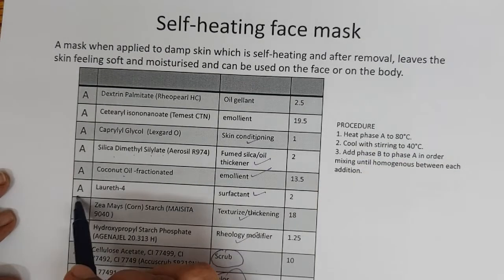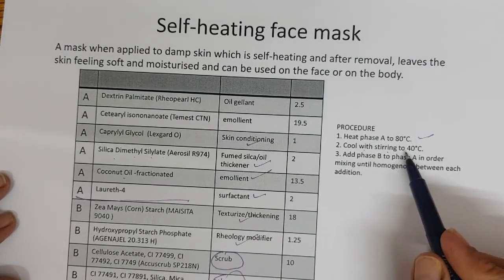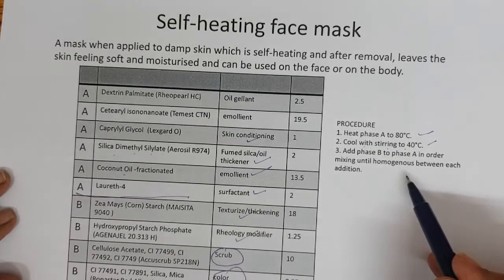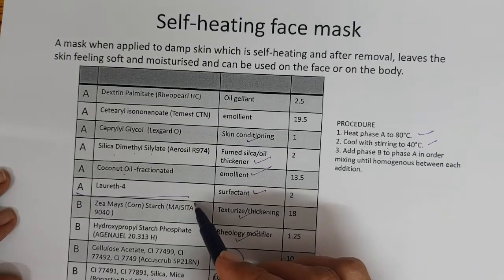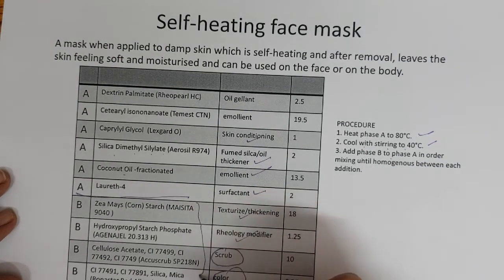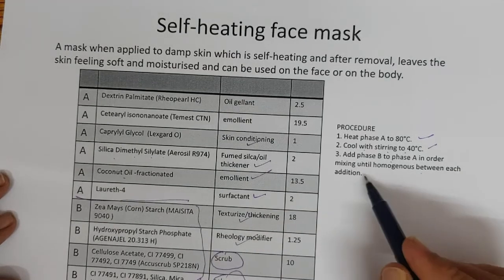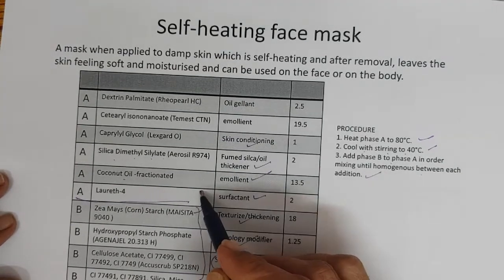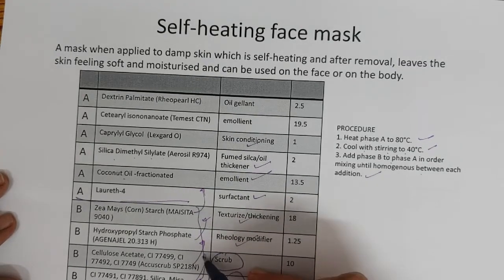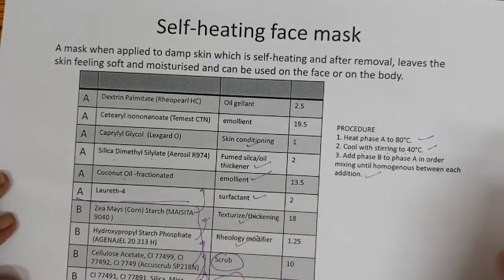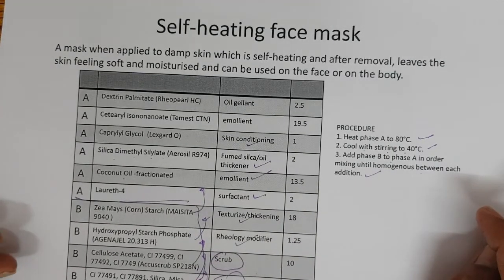Manufacturing of self-heating mask: Heat phase A to 80°C. Cool with stirring to 40°C. Add phase B to phase A, mixing until homogeneous between each addition. Mix until homogeneous. This is the self-heating mask — the key technology is various types of zeolites, which generate heat when they come into contact with moisture or water.